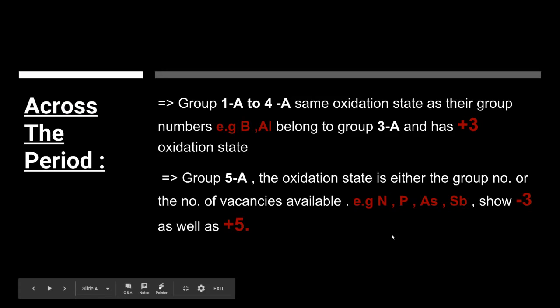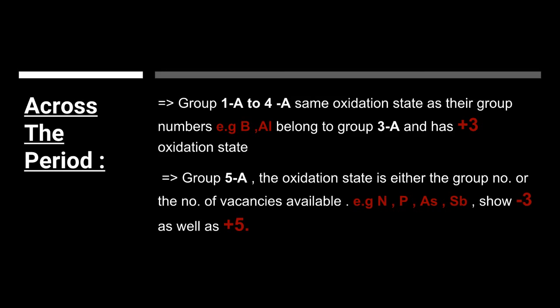Now students, let's discuss the trends of oxidation states across the period, that is from left to right. The oxidation state of a typical element is directly or indirectly related to the group number which the element belongs to in the periodic table. For group 1A to group 4A — that is, alkali metals and the carbon family — the elements have the same oxidation states as their group numbers. For example, boron, aluminium, and gallium belong to group 3A and have a positive 3 oxidation state. The oxidation state is the same as the number of electrons present in the valence shell.